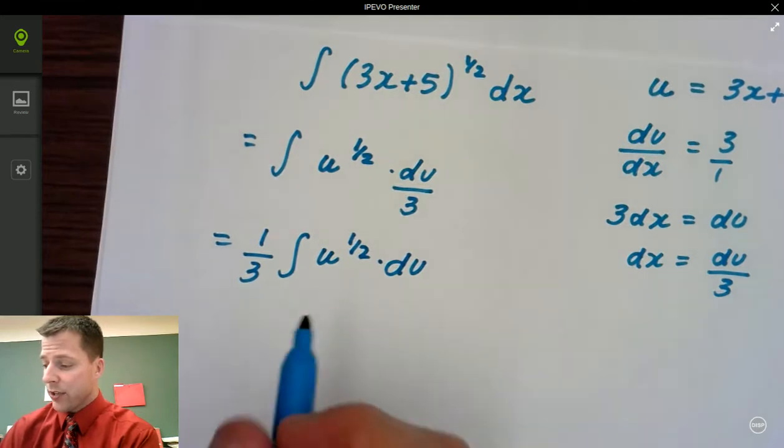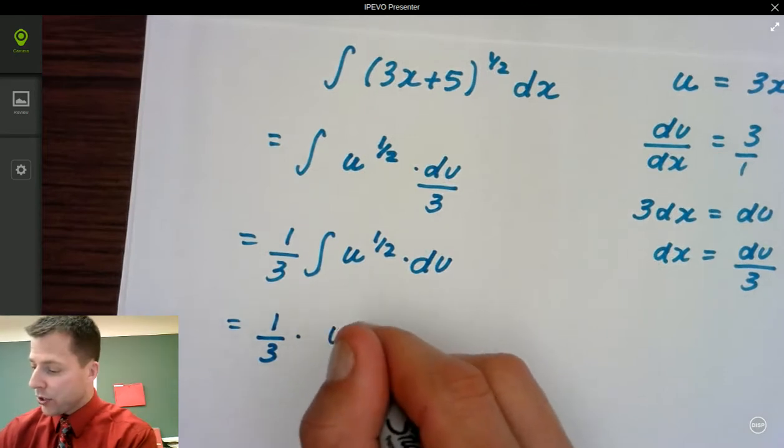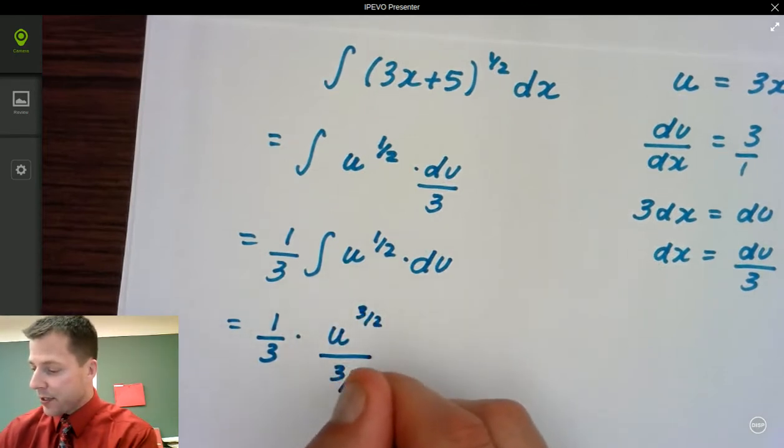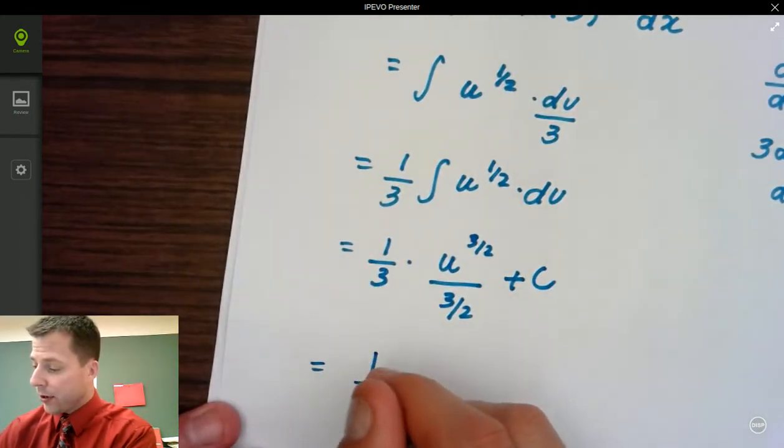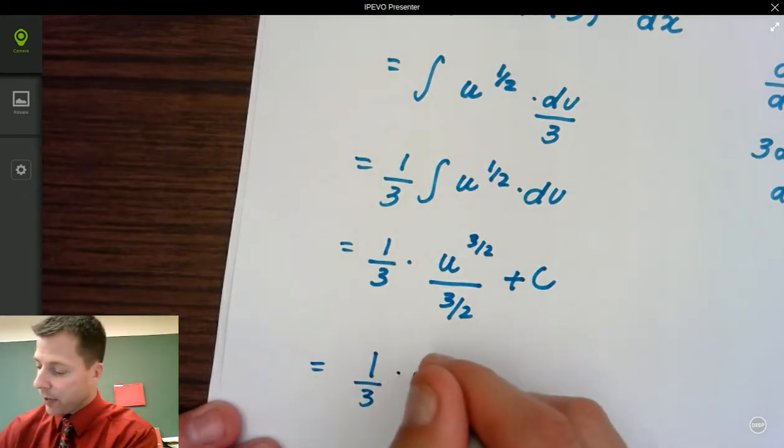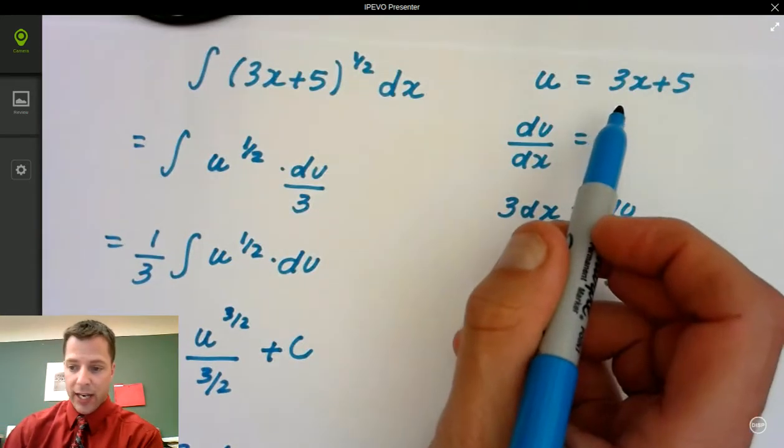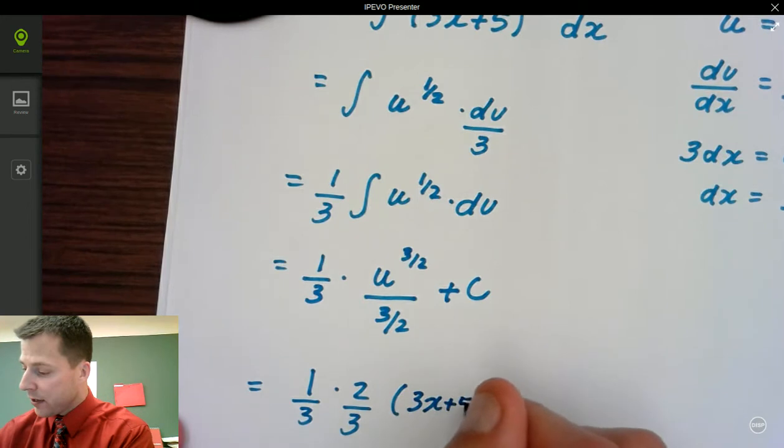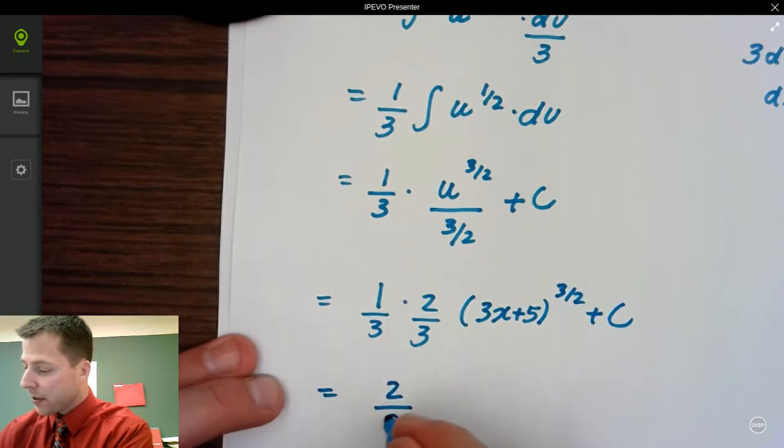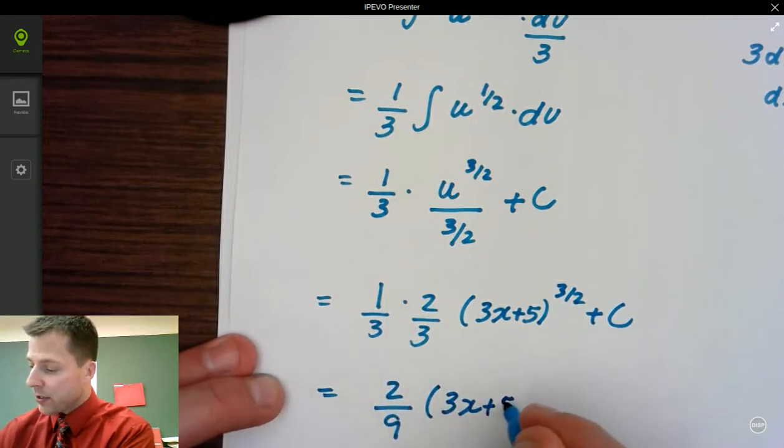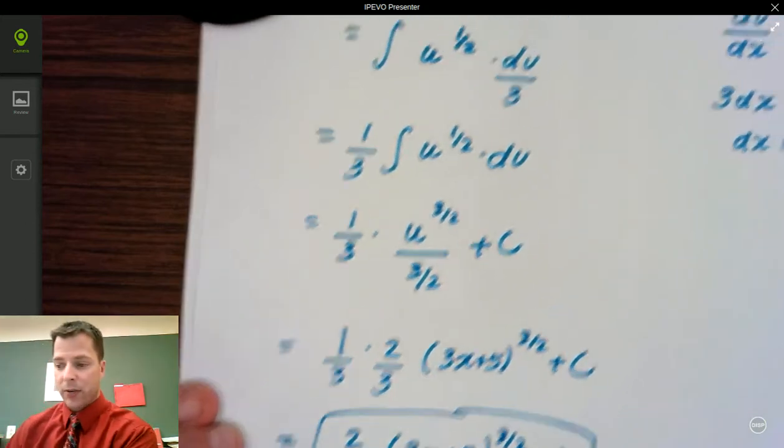And now I can finally integrate. So this is just a power rule. I'm going to have one-third times, and I'm going to add 1 to the u. So it's u to the three-halves divided by three-halves plus c. So it simplifies out a little bit, and I get one-third. Dividing by three-halves is the same thing as multiplying by two-thirds. And my u-value, remember, is 3x plus 5. So I have 3x plus 5 to the three-halves plus c. And let's simplify that out. So I get 2 ninths times 3x plus 5 to the three-halves power plus c. And that's our first u-substitution example. So let's keep going.